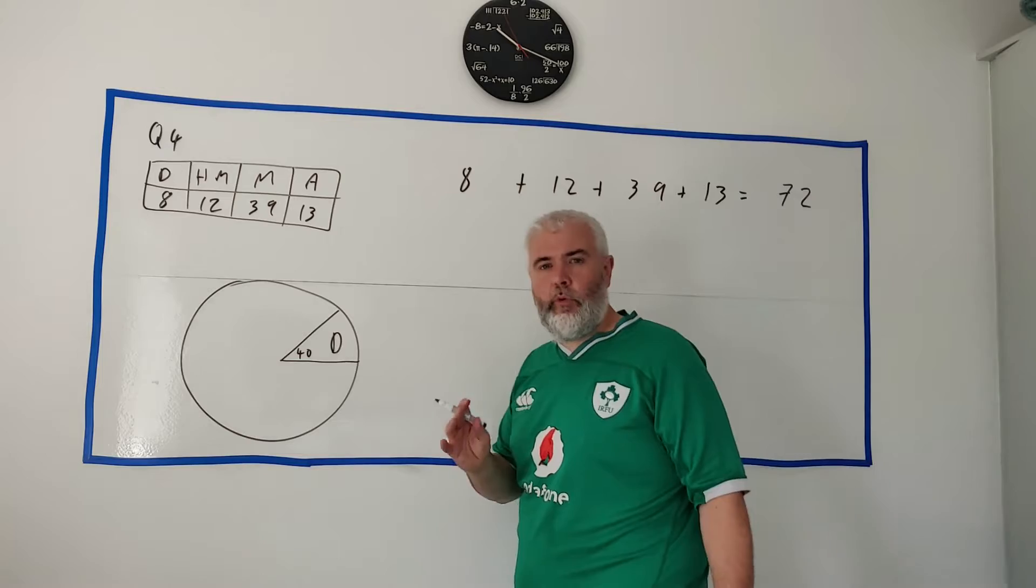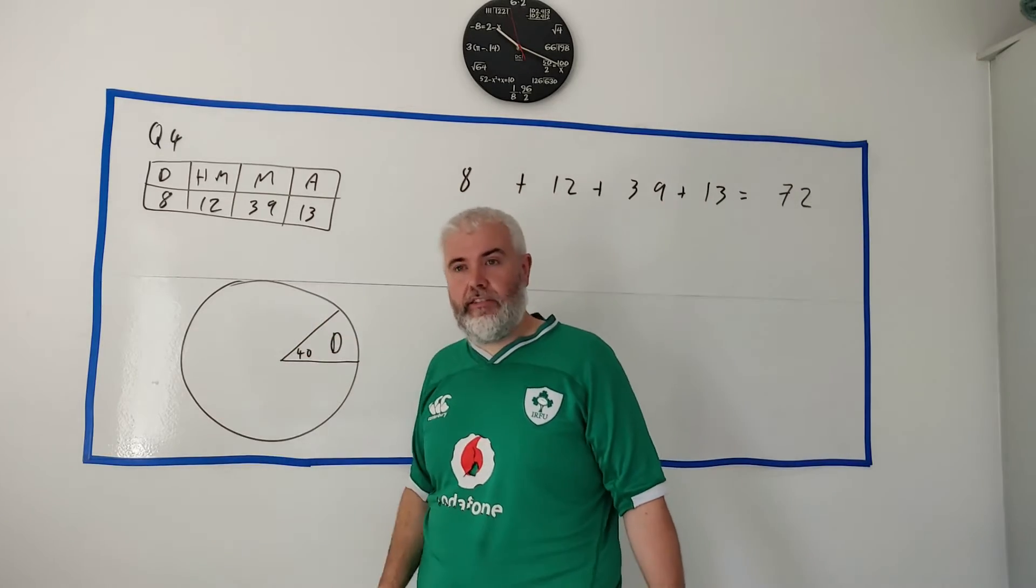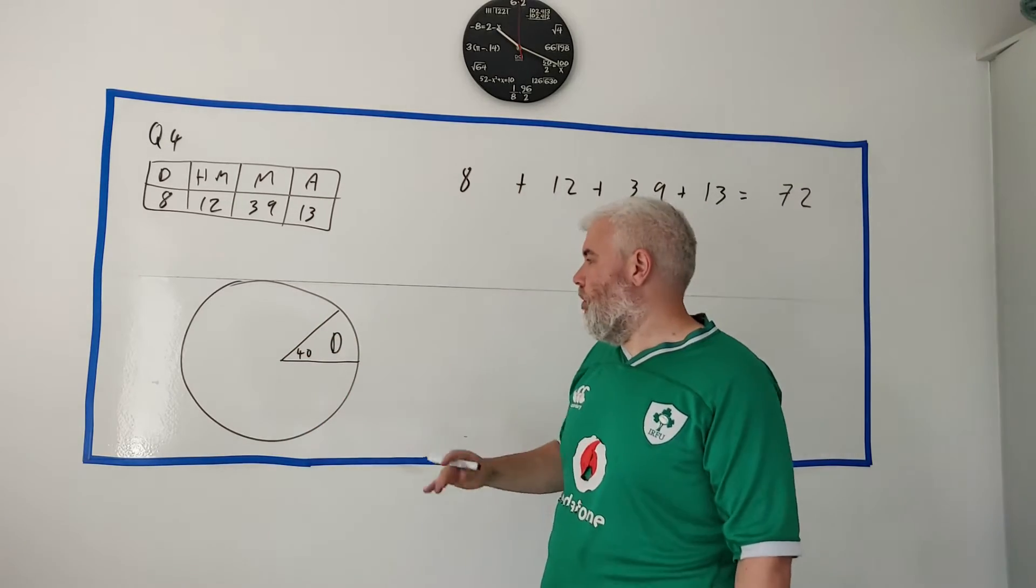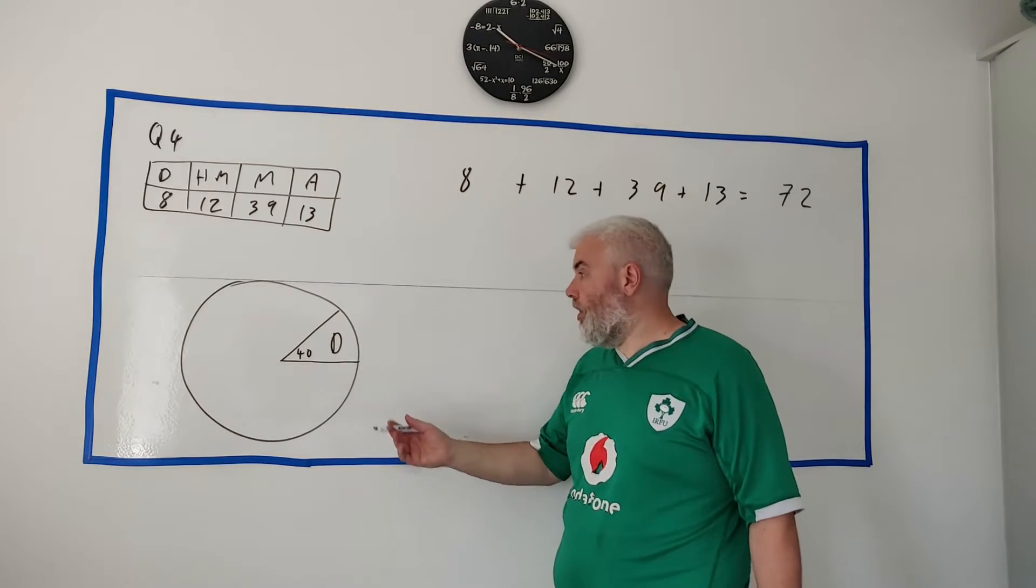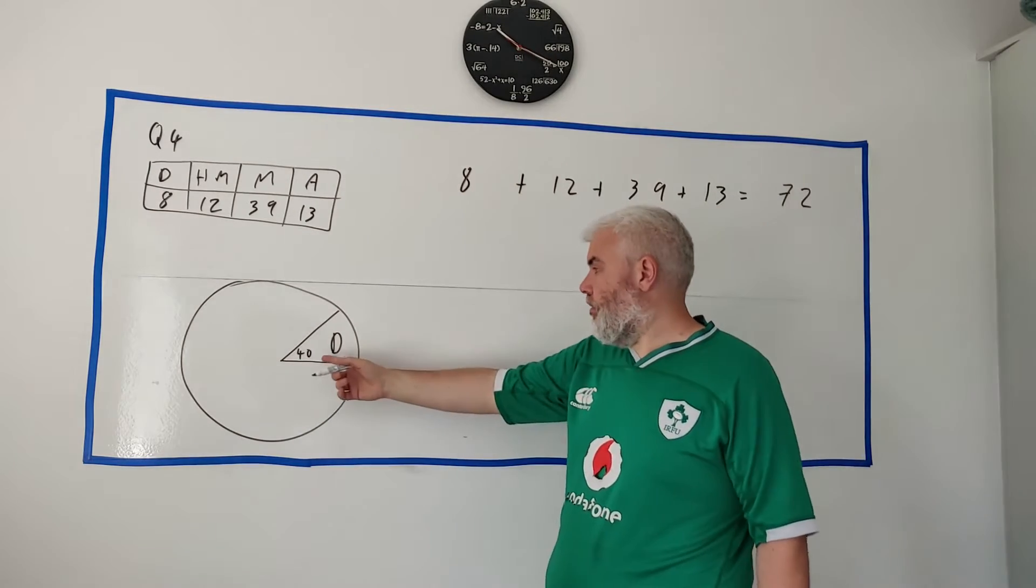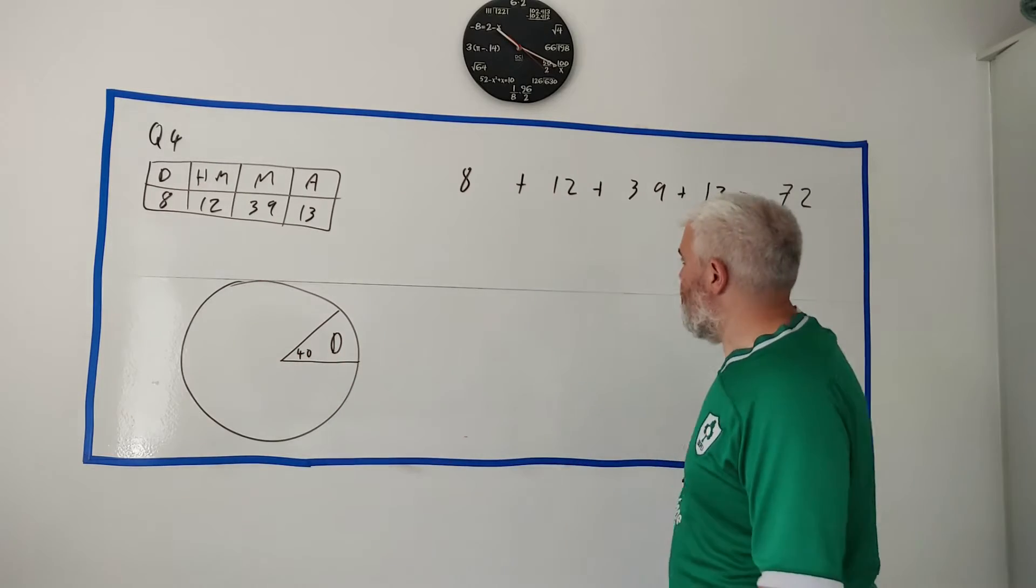Now the other thing we need to know about pie chart is it's a circle and a circle is made up of 360 degrees and we need to know the degrees to draw it. They've given us 40 degrees here for distinction already.